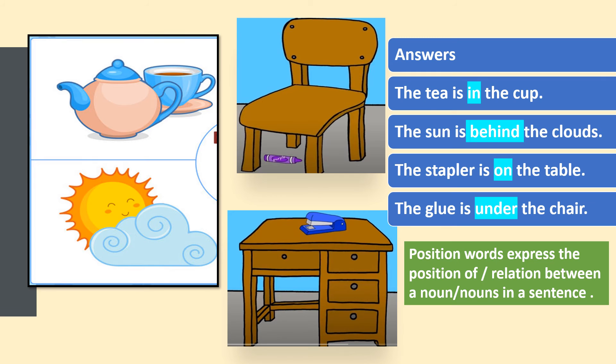In the last sentence, glue and chair are the nouns. The position word 'under' is telling us the relation between the two nouns, and it is also telling us the position of the glue.